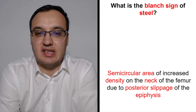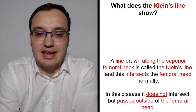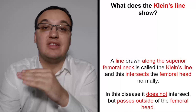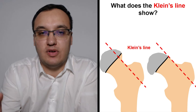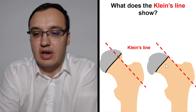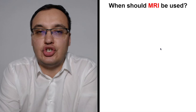The Blanche sign of Steel is a semicircular area of increased density in the neck region. Klein's line is drawn along the superior edge of the femoral neck — if this line intersects the femoral head, it is normal; if it does not, the epiphysis has slipped below the line and this confirms the disease.